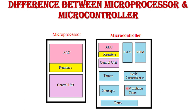All the features of the microprocessor are present in the microcontroller, so we can say that a microcontroller is a microprocessor with integrated peripherals — it has ALU, registers, control unit, ROM, RAM, timer, serial communication, interrupt logic, and input/output ports all on a single chip. Microcontrollers are dedicated to performing one specific task, with the program stored in read-only memory and generally not changing. They are low-power devices with dedicated input and output devices.